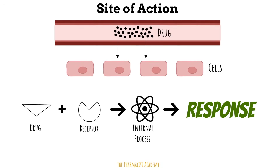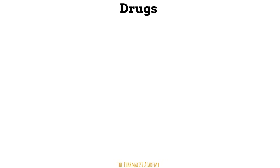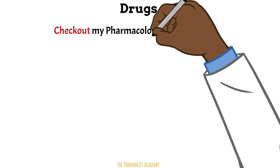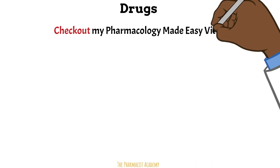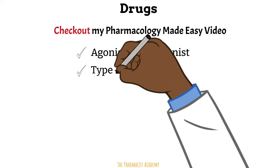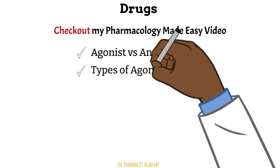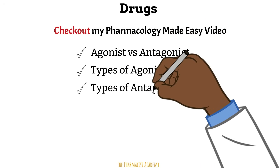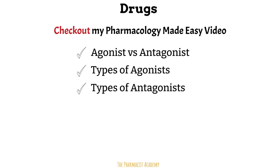In this video, we will cover these three things — though not necessarily the first one, which is really about the drug itself, because I already have a video on that on my channel and I will include the link right above. It covers agonist versus antagonist, the different agonists, and the different types of antagonists.